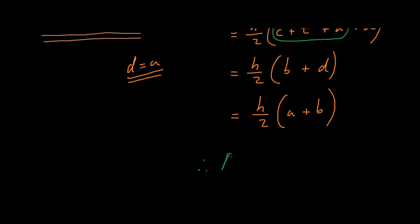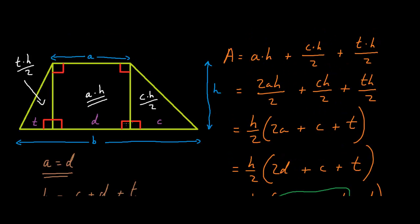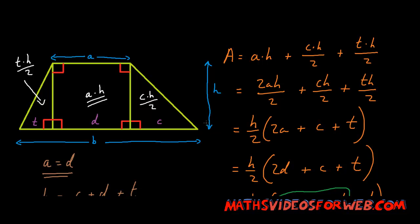Therefore, the area of this trapezium is H over 2 multiplied by A plus B. And this formula here can be used to find the area of any trapezium. But that trapezium must look like this trapezium here. It must have this length A, it must have this length B, and it must have this height H.